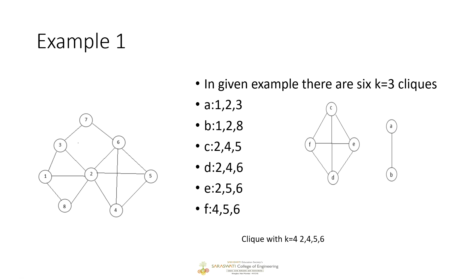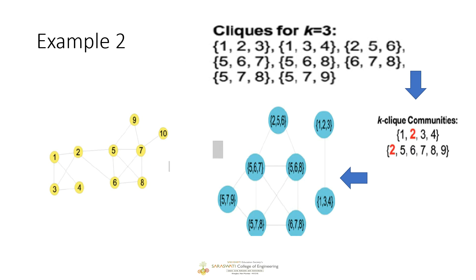Before moving ahead — do we have a clique with value k equal to 4 in this graph? Yes: nodes 2, 6, 5, and 4 form a clique with k equal to 4. We can also have nodes 1, 3, 2, and 8 as another clique with k equal to 4. However, 3, 7, 2, and 6 cannot form a clique with k equal to 4 because there is no connection between nodes 3 and 6.